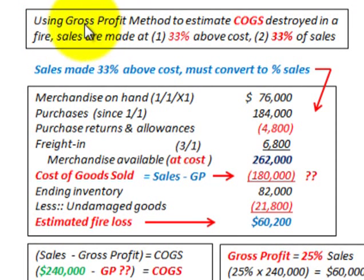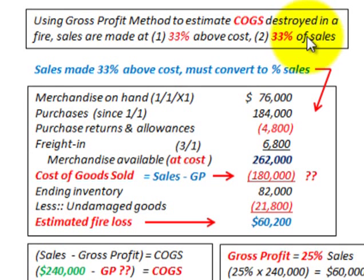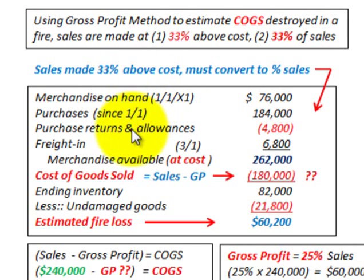We're going to look at two methods for this gross profit. We're going to determine our cost of goods sold based on our sales — first with sales made at 33% above cost, and then also with 33% of our sales. Let's look at sales made at 33% of cost and how we would calculate this cost of goods sold.